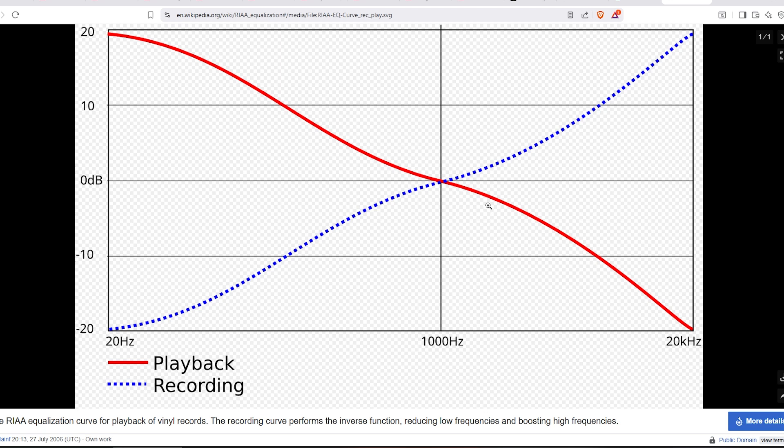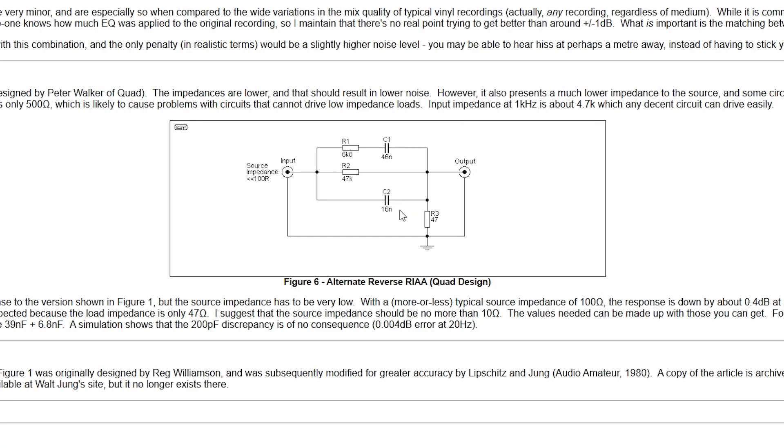You're still going to get the rumble and the wow and the flutter from the turntable, but there are other filters you can incorporate into the amplifier to correct for those as well. Between 1 kilohertz and 20 Hertz and 20 kilohertz respectively, we're boosting above 1 kilohertz and cutting below 1 kilohertz. I'll do a demonstration when I build the preamp as to how it performs with a frequency response without using what's known as a reverse RIAA filter.